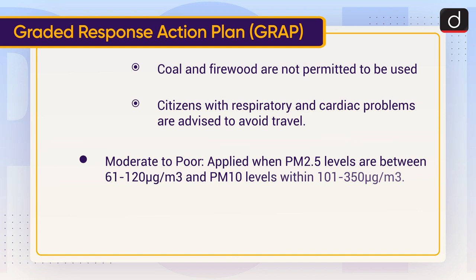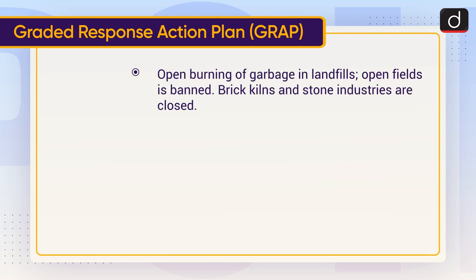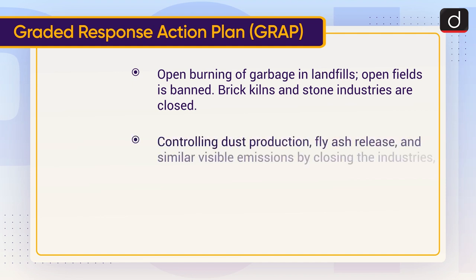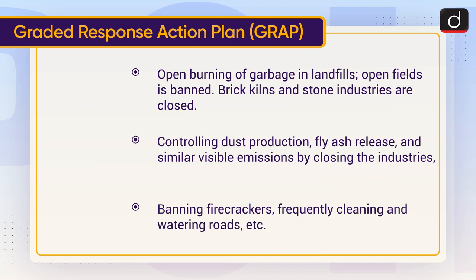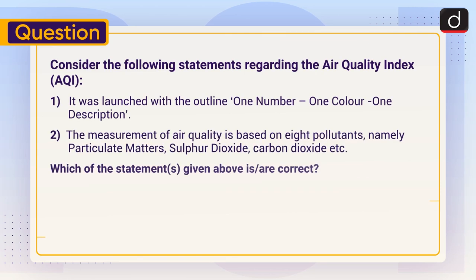The fourth GRAP category is Moderate to Poor, applied when PM2.5 levels are between 61–120 micrograms per cubic meter and PM10 levels are within 101–350 micrograms per cubic meter. Measures include: banning open burning of garbage in landfills and open fields, closing brick kilns and stone industries, controlling dust production, restricting fly ash release and visible emissions, banning firecrackers, and frequently cleaning and watering roads.